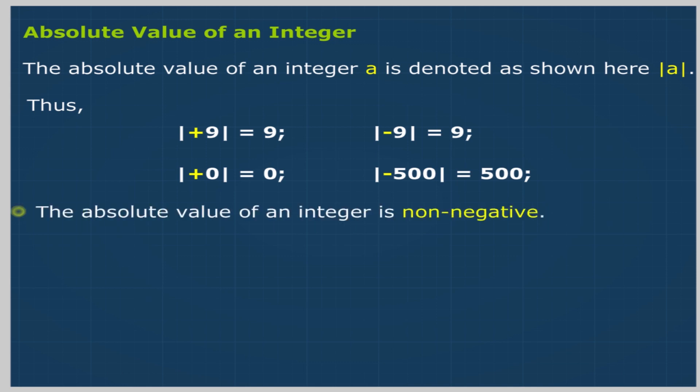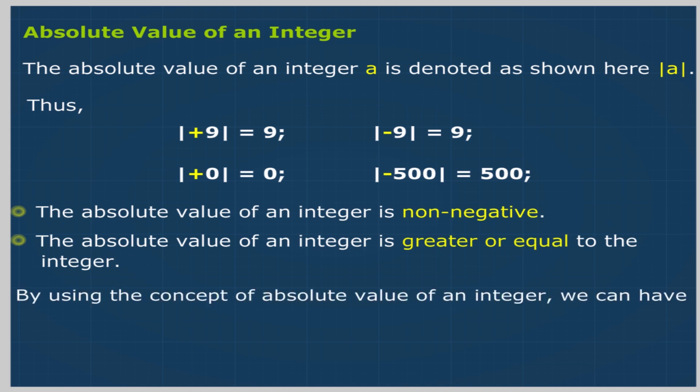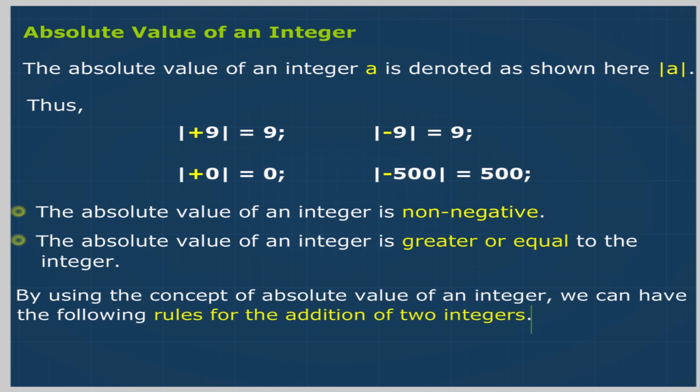The absolute value of an integer is non-negative. The absolute value of an integer is greater than or equal to the integer. By using the concept of absolute value of an integer, we can have the following rules for the addition of two integers.